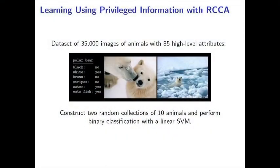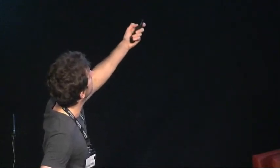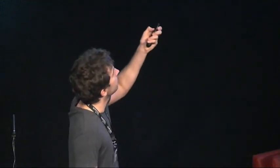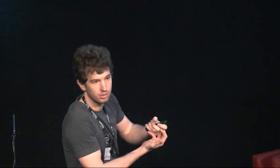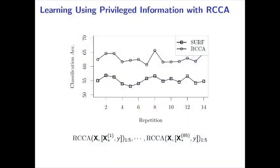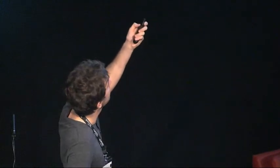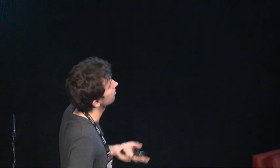Another application is learning using privileged information: you have access to two views of data, but one is missing at test time. Here we have pictures of animals, and for each picture a summary of binary attributes like 'is the animal black?' and 'is the animal white?' At test time these attributes are missing and we only have pictures to train our classifier. We use CCA to extract shared information between the two views. Training with high-level attributes achieves 100% accuracy; training only with images gives about 55%. Using SERP features for images achieves around 55% accuracy, and using the common subspace of nonlinear random features improves classification accuracy by 5% to 10%.